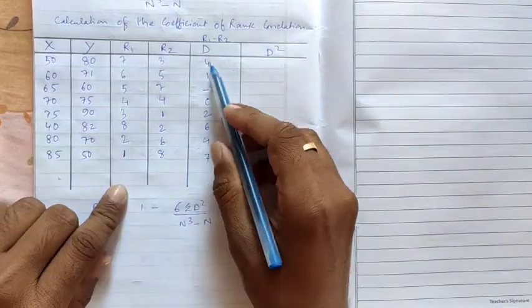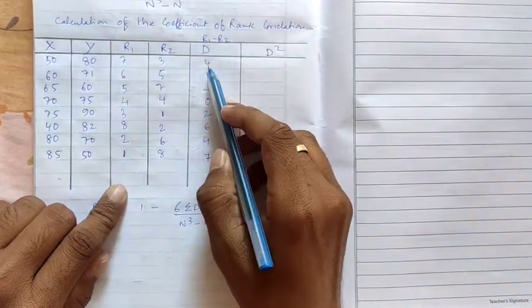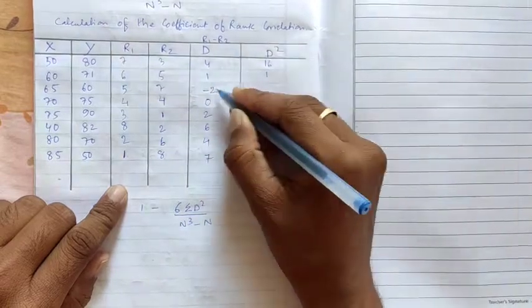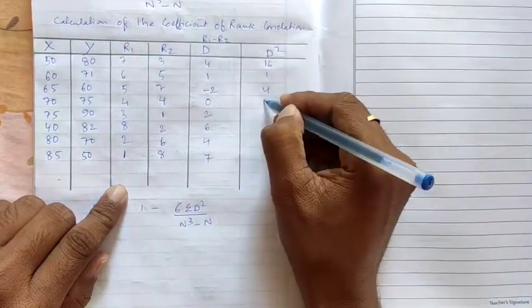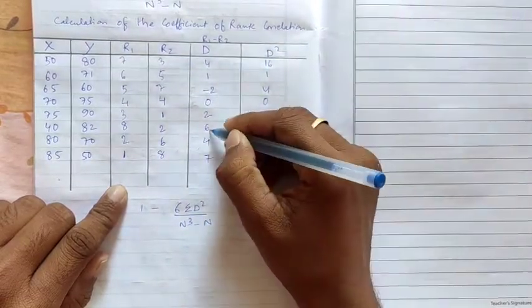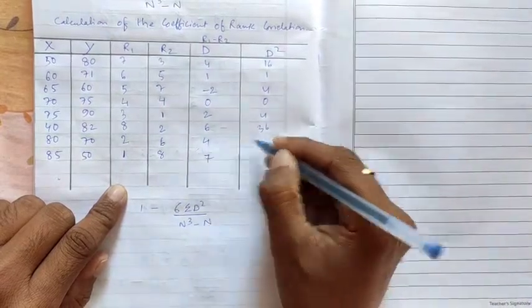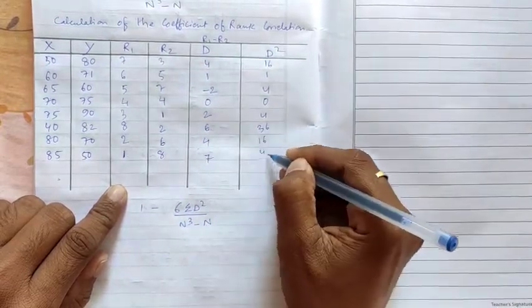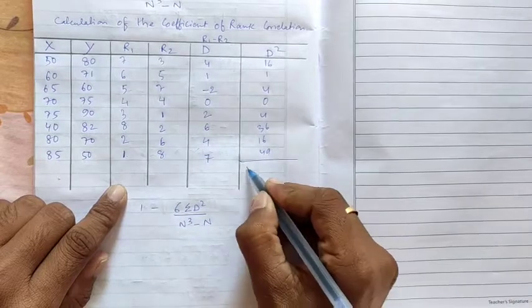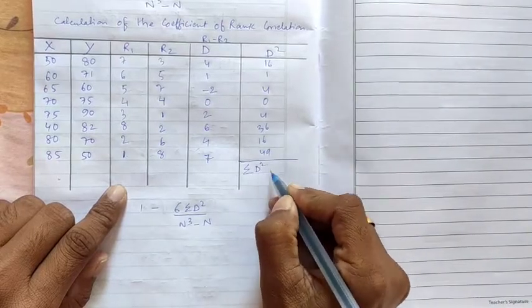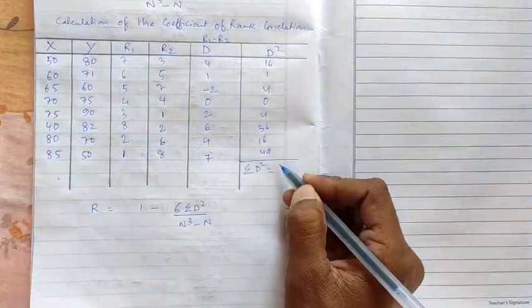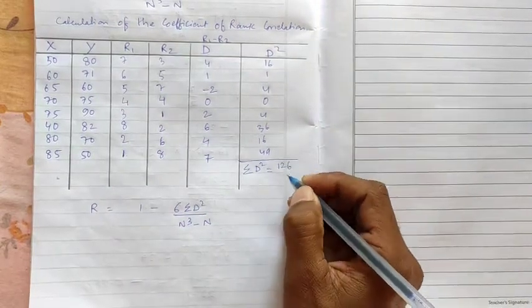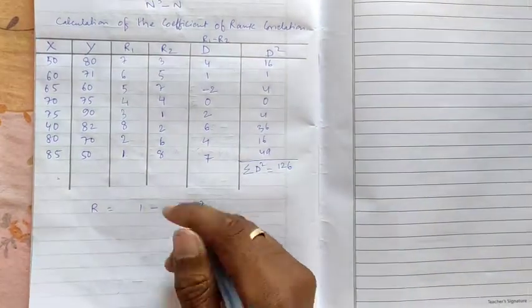Now how to find d square? Directly square of d that is 4 square 16. 1 square 1. 2 square 4. 0 square is 0. 2 square 4. 6 square 36. 4 square 16. 7 square 49. So what we'll do? We'll total this. It is summation d square. So what is the summation d square now? When we total it we'll get 126. 126.